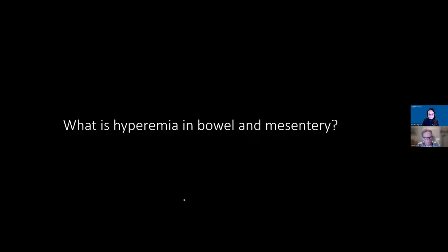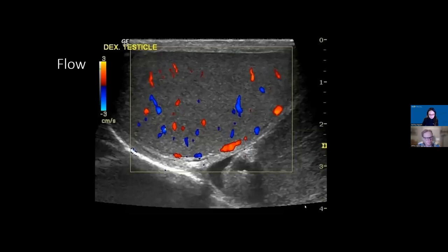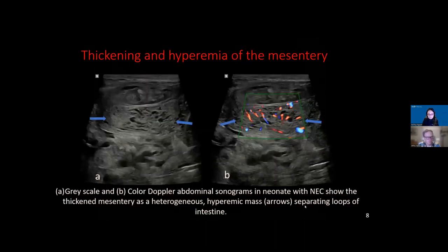What is hyperemia in the bowel and mesentery? Explaining it simply for residents: when you first start doing bowel imaging it's difficult to know normal from abnormal. Just think of testicles — we've done a lot of testicle Doppler. Normal testicular flow equals normal bowel flow. If you see what looks like hyperemia on a testicle, that's hyperemia in the bowel as well. This is not written anywhere — it's just a teaching analogy for those not used to bowel imaging but experienced with other ultrasound.